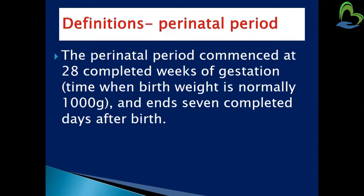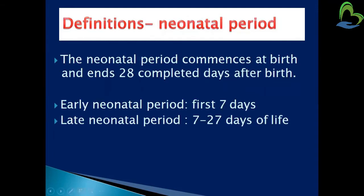The perinatal period commences at 28 completed weeks of gestation, when the birth weight of the baby is normally 1000 grams or more, and ends at seven completed days after the birth. So the perinatal period spans from the 28th gestational week with a birth weight of 1000 grams, to seven days after birth.